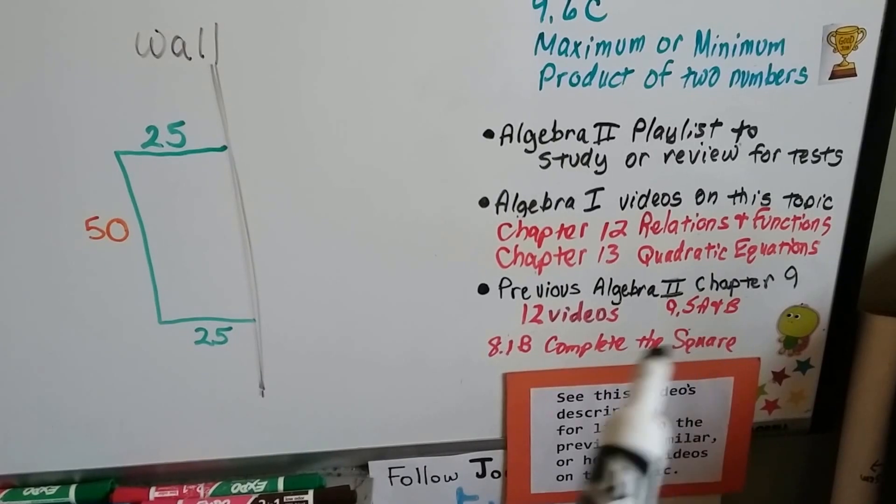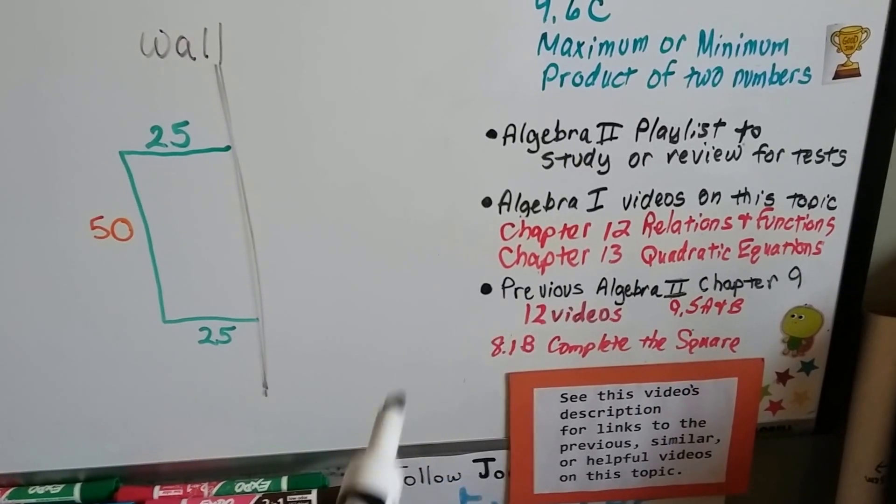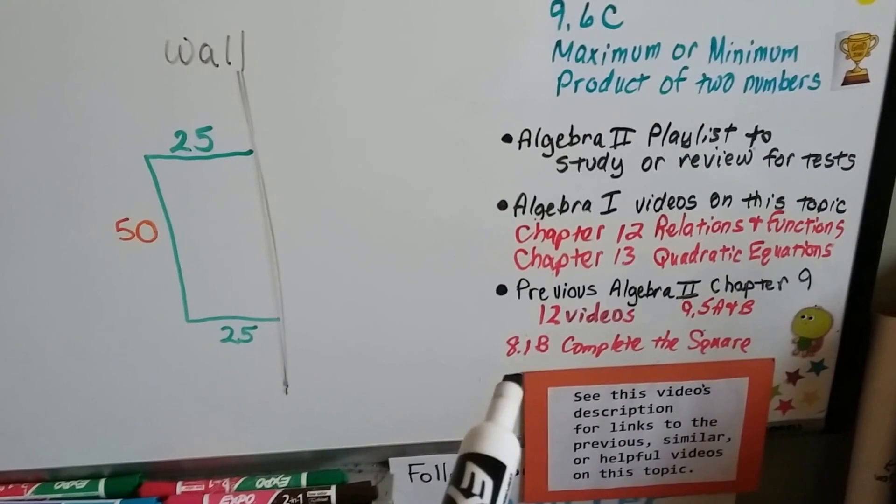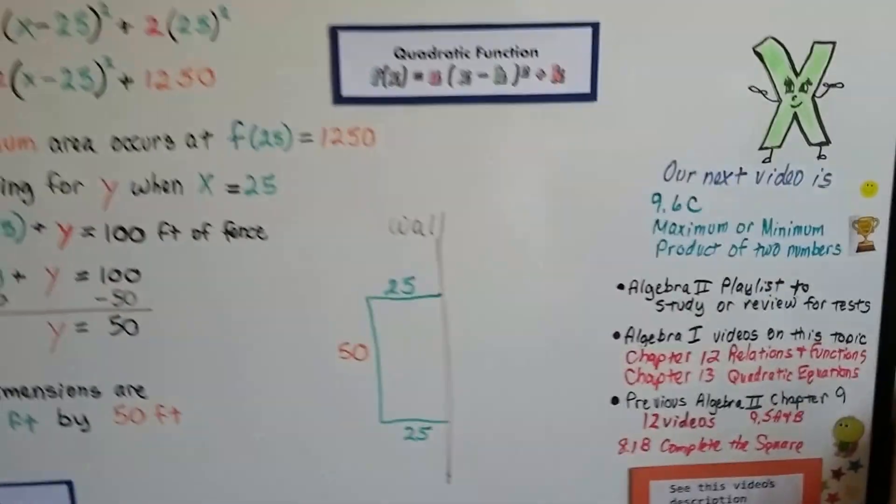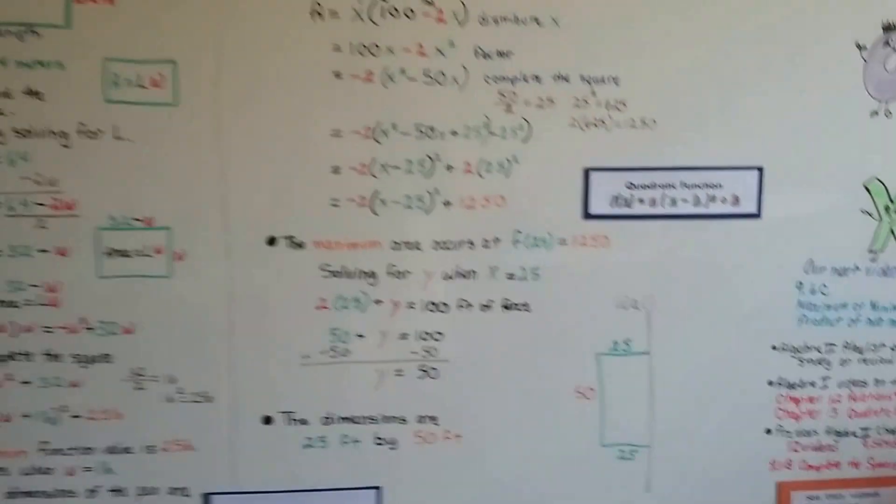I'm going to have links to those previous videos that will help you, 9.5A and B and all the other 12 previous videos for this chapter. I'm also going to have a link to 8.1B where we learned how to complete the square. So if you forgot how to do that, there'll be a link for that too.